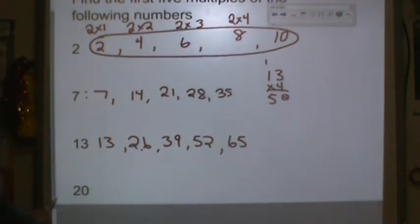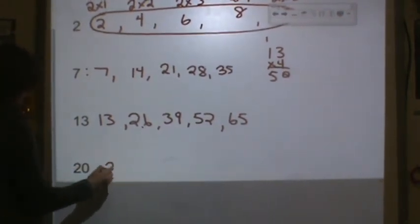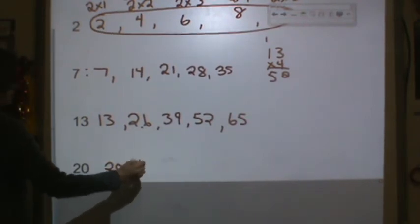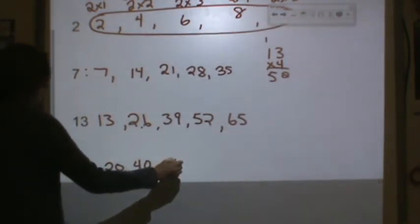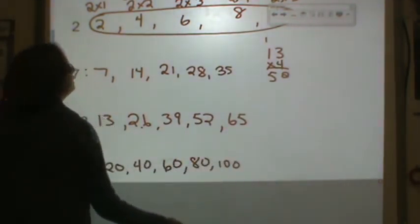All right, and one more. 20. First five multiples of 20. It'd be 20 times 1 would be 20. 20 times 2 would be 40. 20 times 3 would be 60. 20 times 4 would be 80. And 20 times 5 is 100.